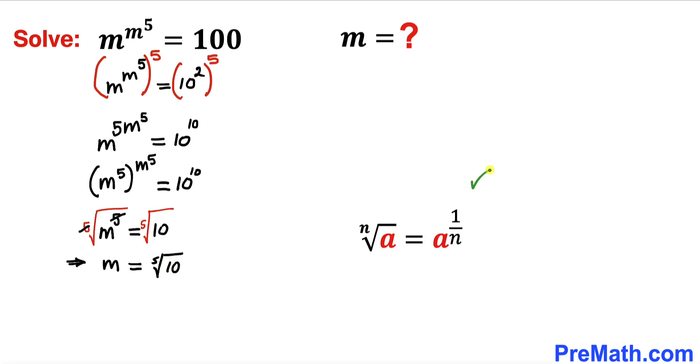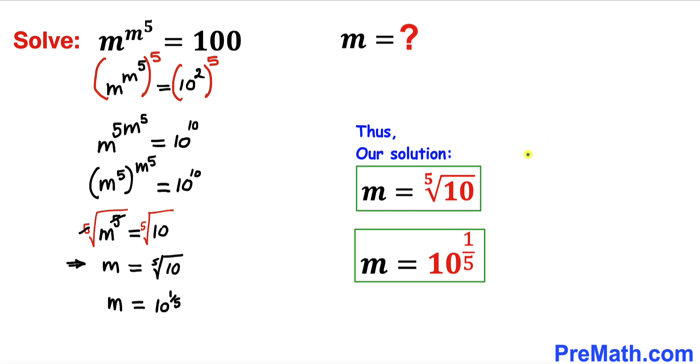And now let's recall this basic fact: this is our radical notation and this is our equivalent exponential notation. So therefore we can write m equals—this could be written as 10 to the power of 1 fifth. And here's our solution in terms of radical notation as well as exponential notation.